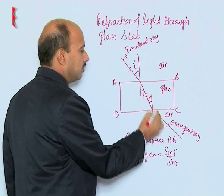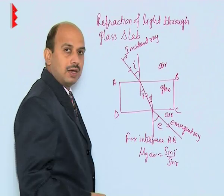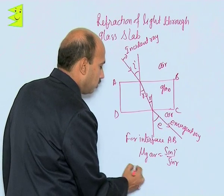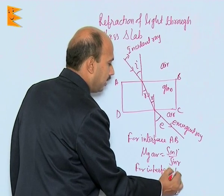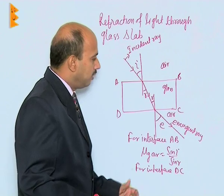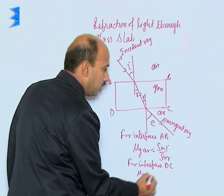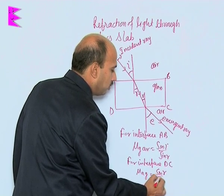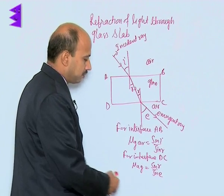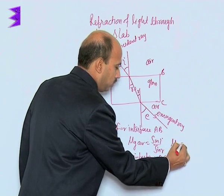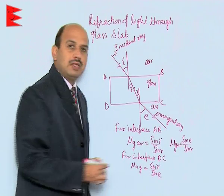Similarly, for interface DC, the angles are R and E. We can reverse the path using the principle of reversibility. For interface DC, the refractive index of air with respect to glass equals sin R upon sin E. Therefore, mu G with respect to air equals sin E upon sin R — this is applying the principle of reversibility.